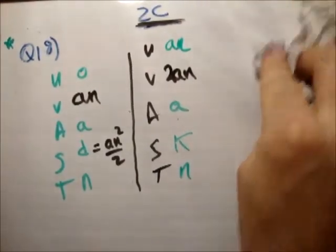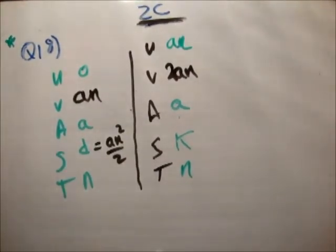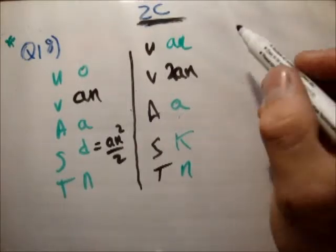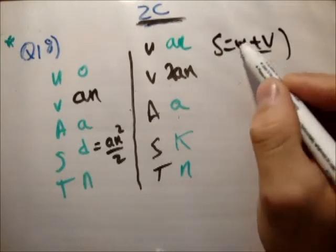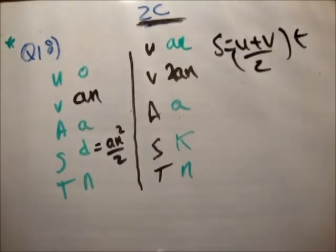Next of all, we'll go for the distance. S is equal to u plus v over 2 times t. Like that.